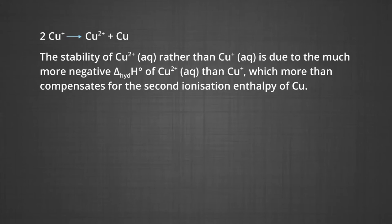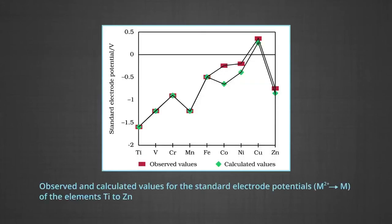This more negative hydration enthalpy more than compensates for the second ionization enthalpy of copper. The figure shows the observed and calculated values for the standard electrode potential from M2+ ions to solid metal atoms for elements from titanium to zinc.